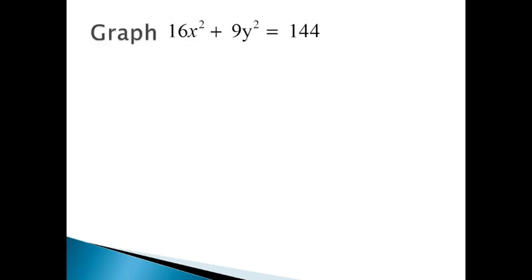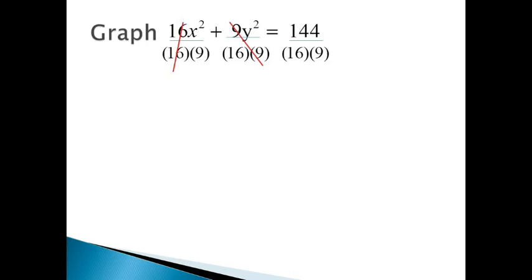Sometimes an ellipse equation is written in a non-standard form — they're just trying to confuse you. What you need to do is divide both terms by the product of a and b values. Here that means dividing everything by 16 times 9, which is 144. The 16s cancel in the first term, the 9s cancel in the second term, and 144 over 144 gives 1. So x squared over 9 plus y squared over 16 equals 1.